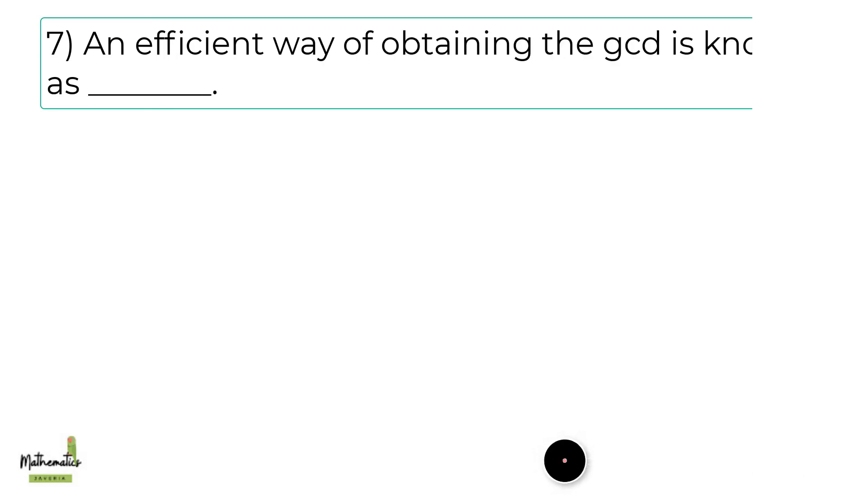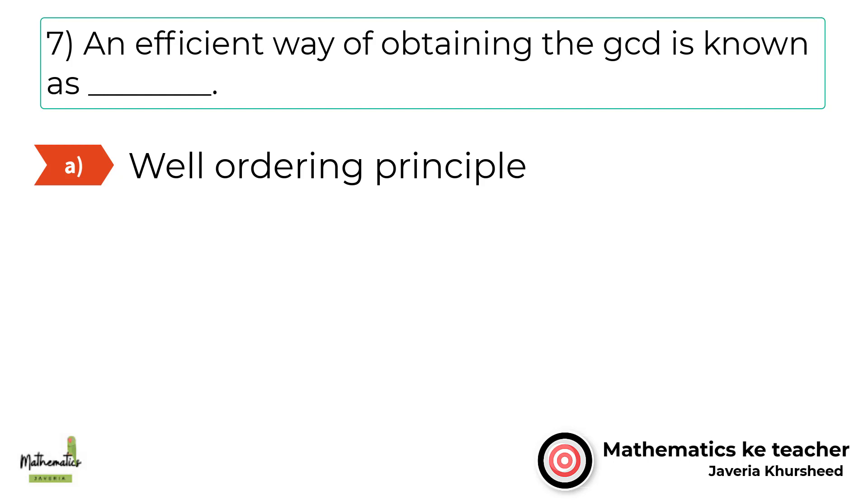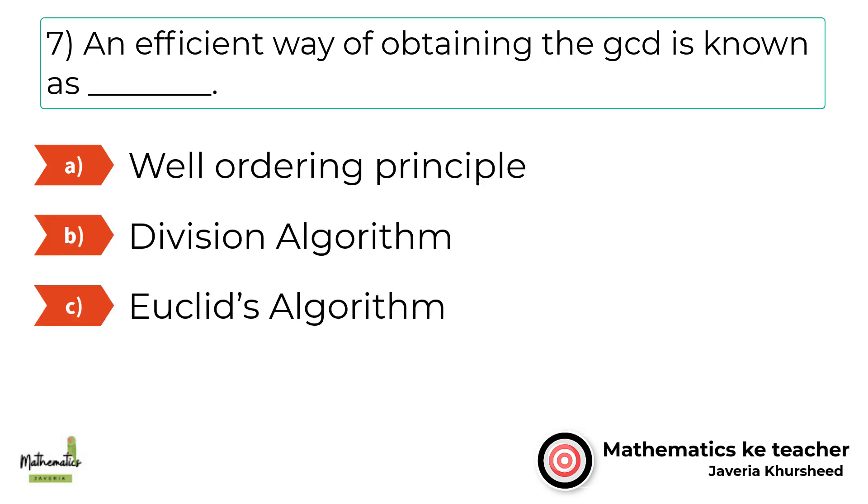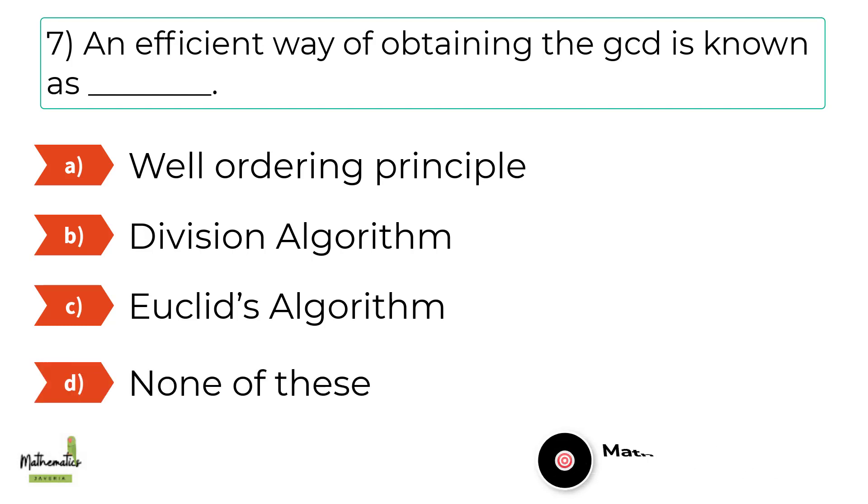Number 7. An efficient way of obtaining the GCD is known as A, well ordering principle. B, division algorithm. C, Euclid's algorithm. D, none of these.